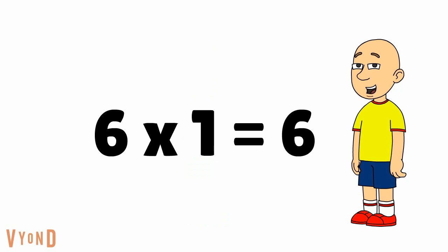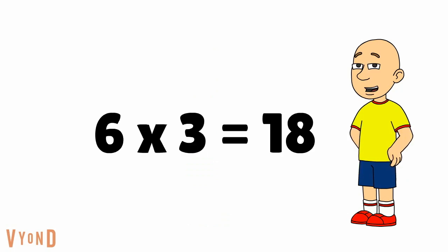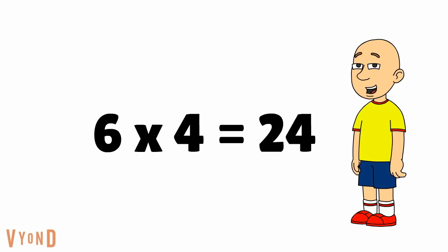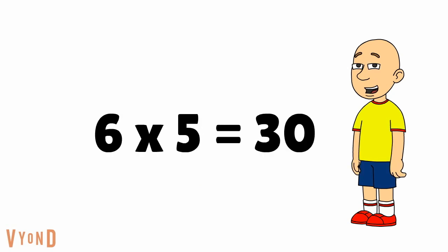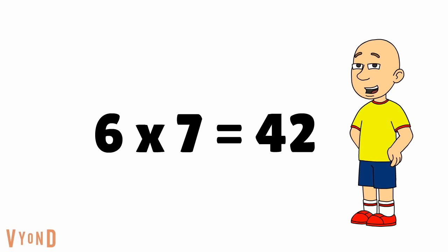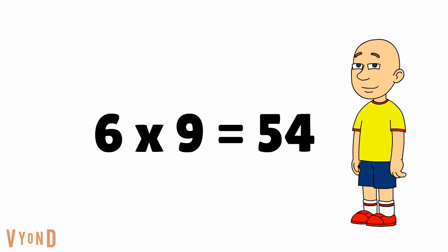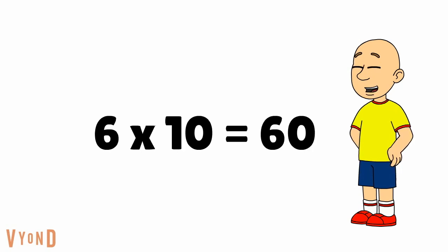Now let's get to it. 6 times 1 equals 6. 6 times 2 equals 12. 6 times 3 equals 18. 6 times 4 equals 24. 6 times 5 equals 30. 6 times 6 equals 36. 6 times 7 equals 42. 6 times 8 equals 48. 6 times 9 equals 54. 6 times 10 equals 60.